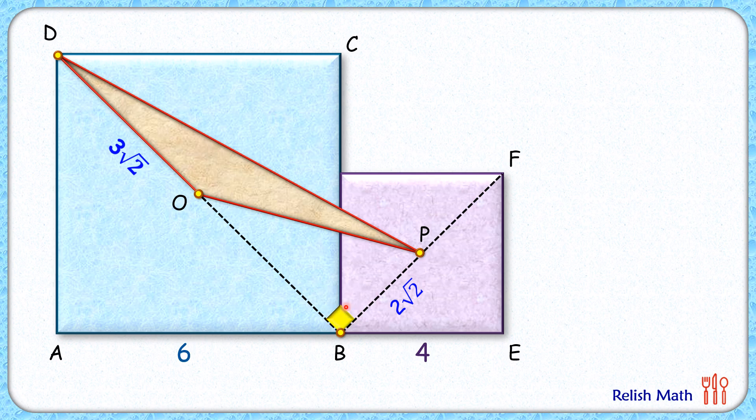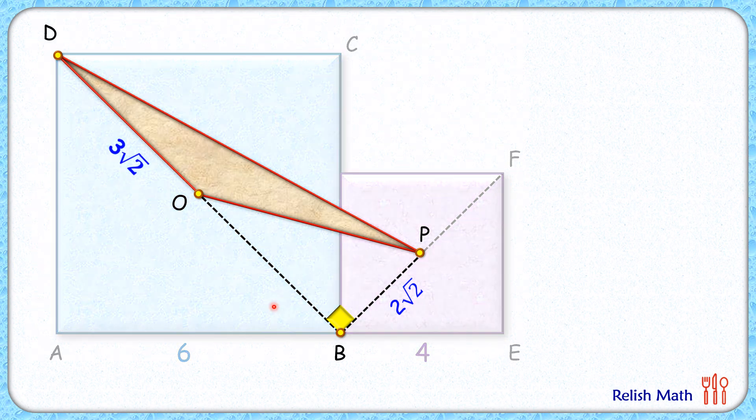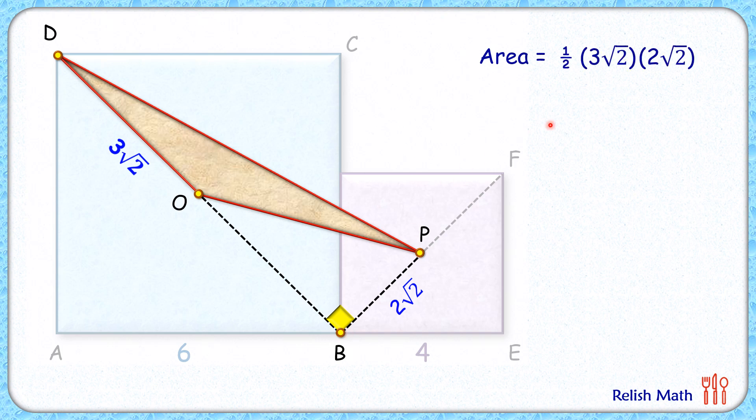Now here is the magic. If you look carefully for this triangle DOP, DO is the base length, PB is the height, so area of this triangle is half of base into height or half of 3 root 2 times 2 root 2. Simplifying it, area of this triangle is 6 centimeter square.